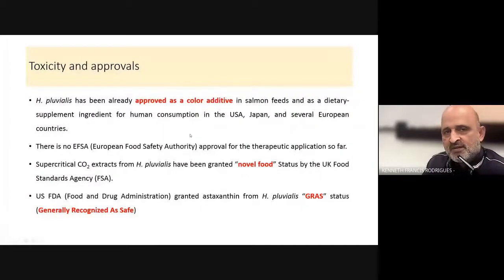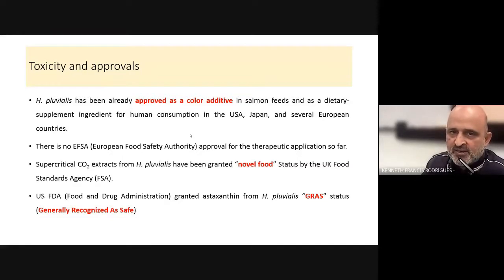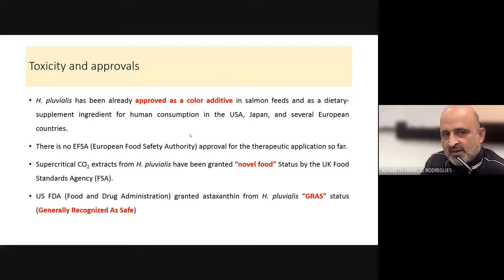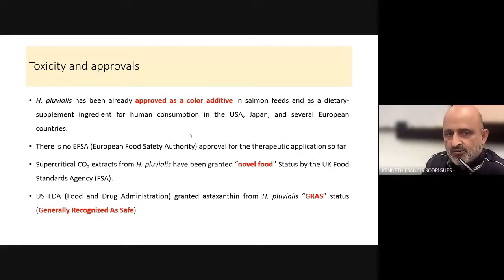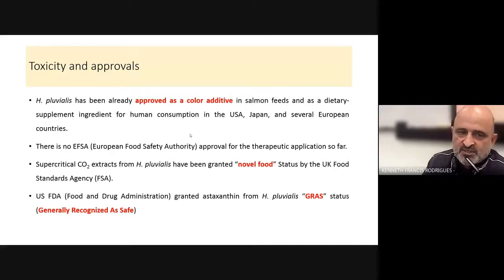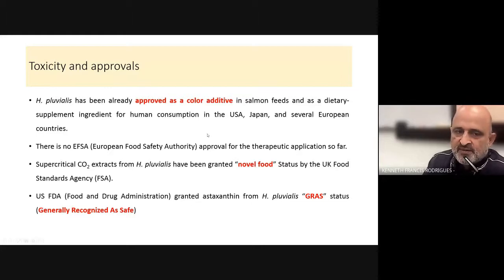With regard to toxicity and approvals, all compounds must be approved by regulatory authorities before marketing. Astaxanthin has been approved as a colour additive in salmon feeds, accounting for the red colour of farm-grown salmon, and there are no contraindications or reported toxicities. Astaxanthin has also been given the status of a novel food by the UK Food Standards Agency and is generally regarded as safe, meaning the US FDA has found no evidence of toxicity with regard to astaxanthin.